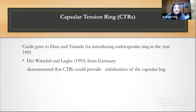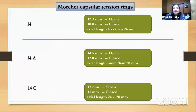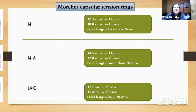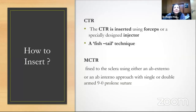Capsular tension rings were a big invention that revolutionized the way we deal with subluxated lenses. These rings come in different types — open, closed — in various sizes, made of polypropylene or PMMA, with an eyelet at the end. They are inserted with forceps or an injector.